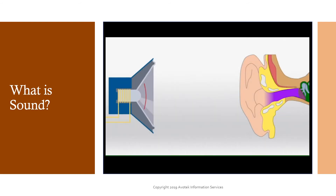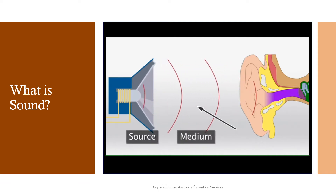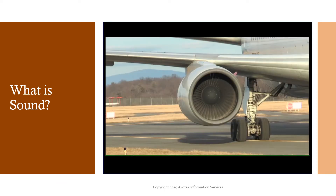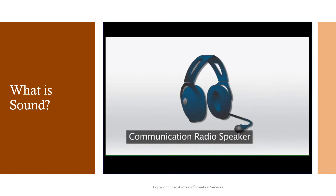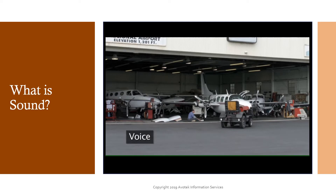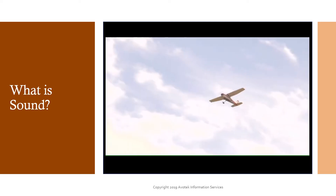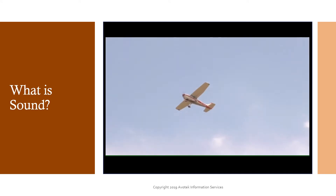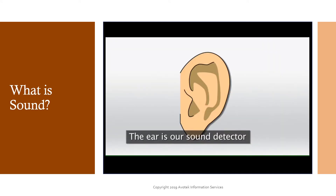There are three basic elements of every perceived sound. These are a source, a medium for the sound to travel, and finally a detector to receive the sound. There are hundreds of sound sources — a jet engine, a communication radio speaker, a voice talking in the hangar, for example. The typical medium for sounds that we hear is the air, and the ear is our sound detector.